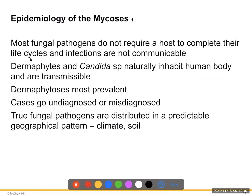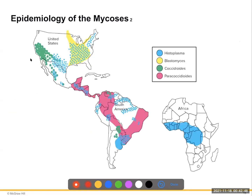Most fungal pathogens do not require a host to complete their life cycle, and infections are generally not communicable. Dermatophytes and Candida naturally inhabit human bodies and are transmissible. Dermatomycoses are the most prevalent fungal infections and can go undiagnosed or misdiagnosed. True fungal pathogens are distributed in predictable geographic patterns according to their climate and soil.